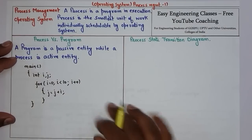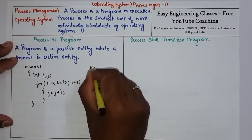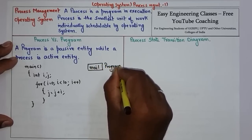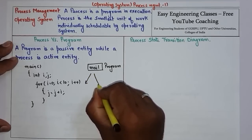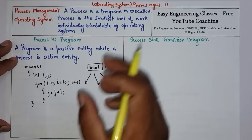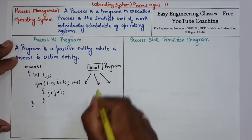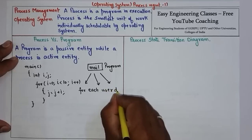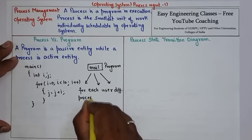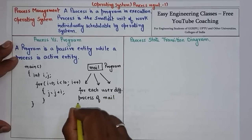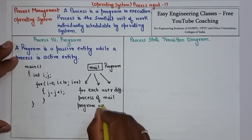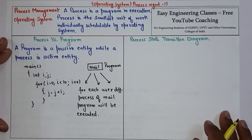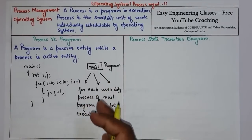One of the benefits of a process is that if you have a program — for example, a mail program — in a multi-user system, the same program can be executed by different users, and each time the program runs it creates its own process. A different process will be run for each user. So that is one of the main advantages of using processes: you can have a single program shared by many users. That is the main difference between a process and a program — process is an active entity whereas a program is a passive entity.